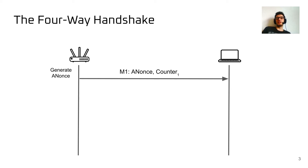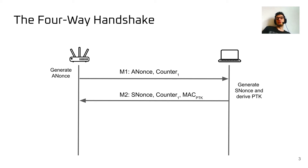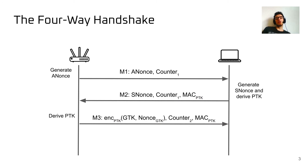After the client receives message one, it will generate its own contribution towards the randomness — the so-called SNonce — and it will derive a candidate pairwise transient key from both the SNonce and the ANonce. It will then send message two towards the access point, which consists of the SNonce, the counter it saw in message one, and the message authentication code computed with the just-derived candidate pairwise transient key. After the access point receives message two, it will also derive this candidate pairwise transient key and use it to encrypt the currently in-use group key and its associated nonce. It will then send that encrypted key and encrypted nonce in message three together with an incremented replay counter and another MAC.